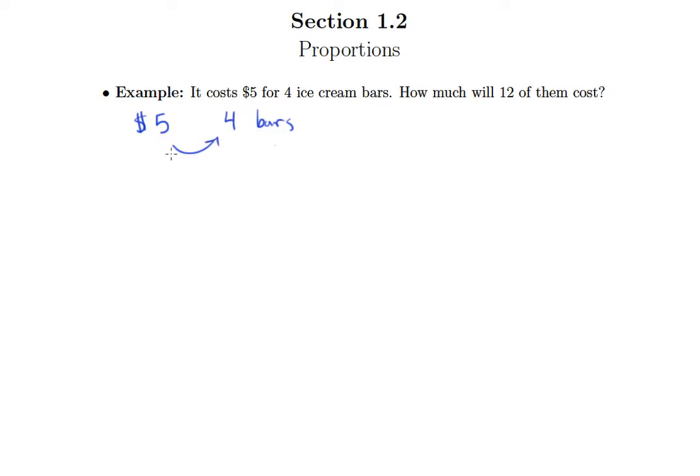These two numbers go with each other, but what is it asking us to find? Something we always want to do no matter what kind of story problem we're given is first figure out what they're asking us to find. Well, we understand that first of all, X is going to be how much will 12 of them cost, so X is going to be how much 12 ice cream bars cost.